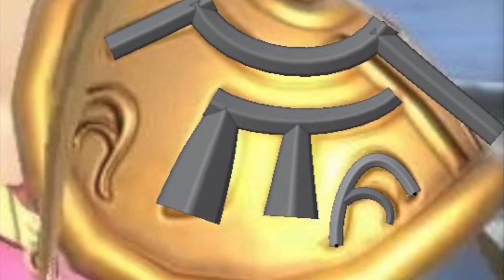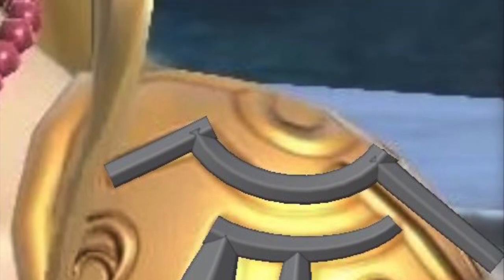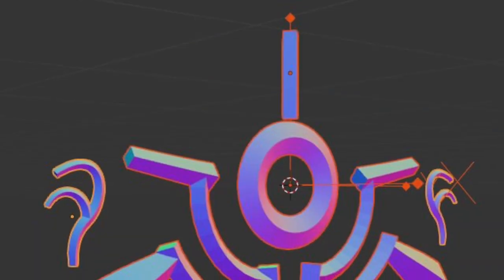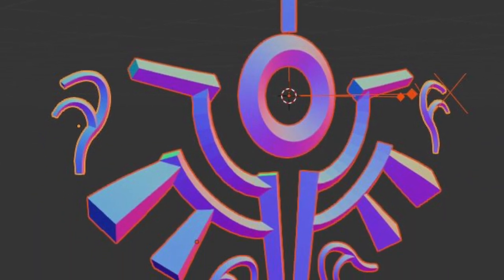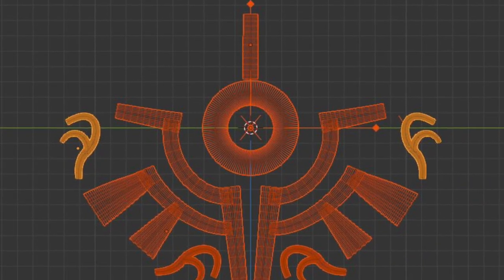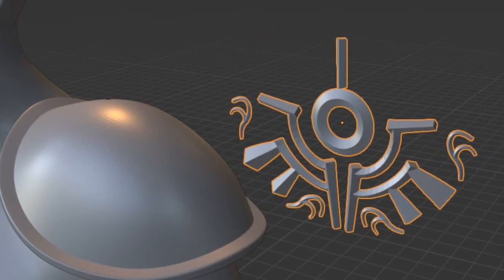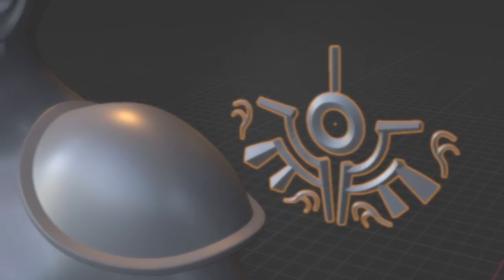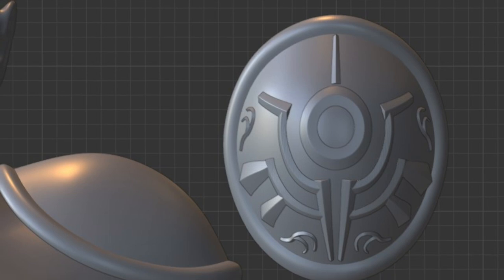Starting off in Blender I like to bring in different references to trace over mostly using curves but also other shapes and then I just keep refining it until I get what I want and then mirror it. And then I 3D modeled the pauldron part separately and added the design on top of it.